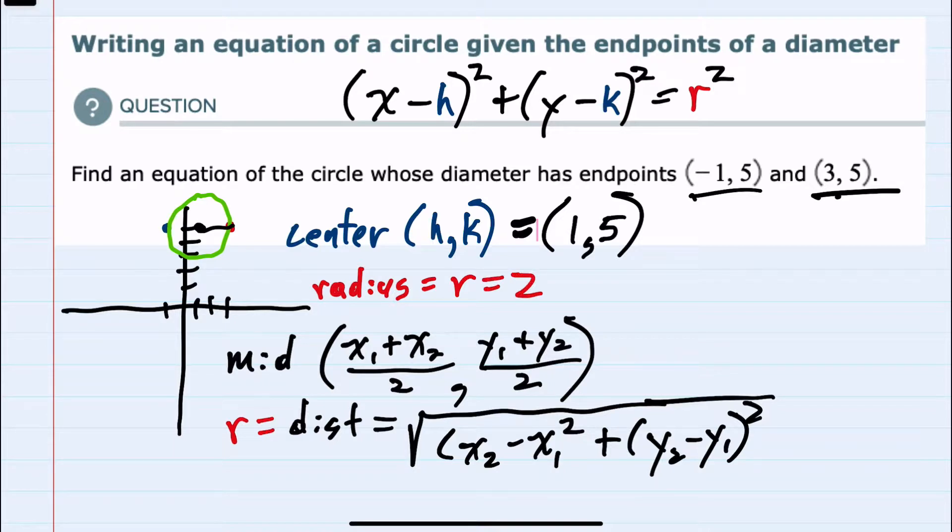And now that we have h and k and we have r, we can substitute into the general form. So the equation of the line is x minus h, which here is 1 squared,